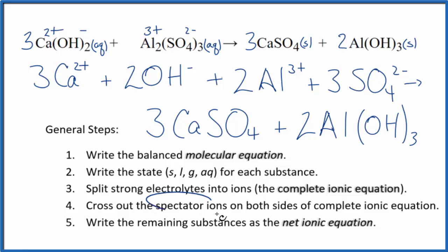Next, we'll cross out spectator ions. These are on both sides of the complete ionic equation. When I look at it, there's nothing different from the reactants in the products. So in this case, the net ionic equation is the same as the complete ionic equation. Let me clean this up. Write the states. We'll have our net ionic equation.